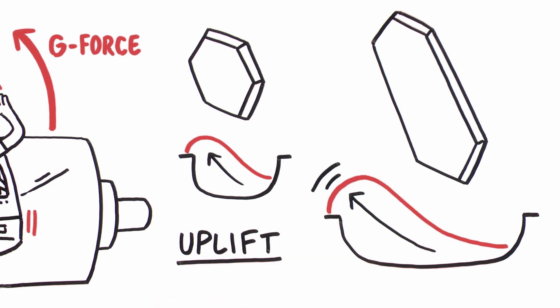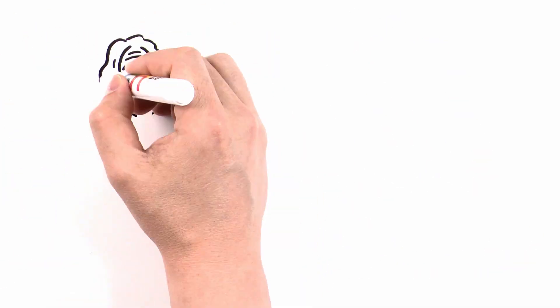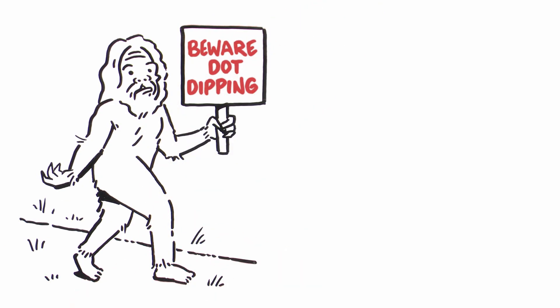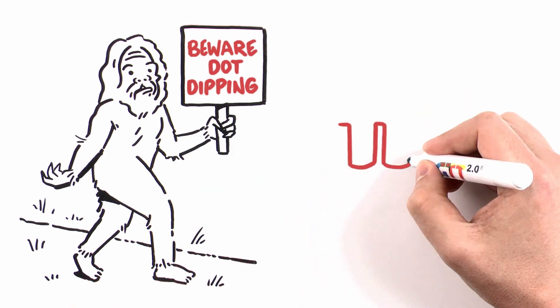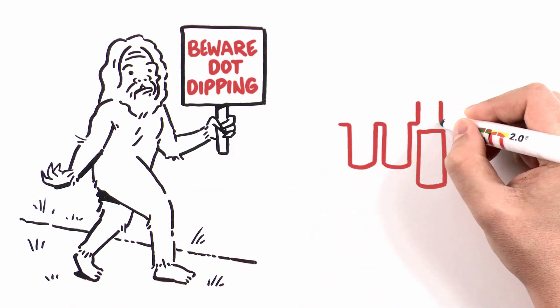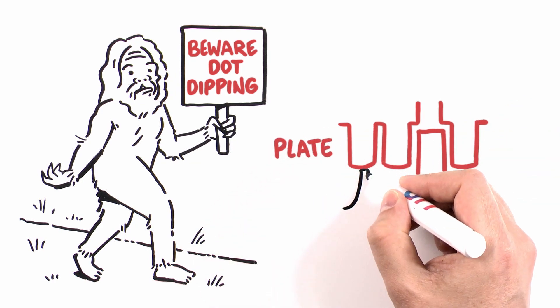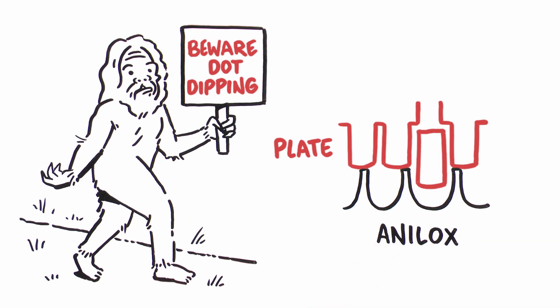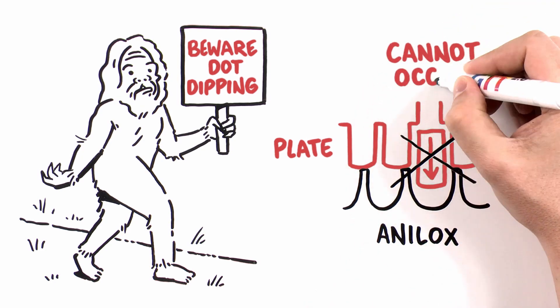All cell-based engravings create turbulence on the surface that is simply not optimal for process dot printing. The industry myth that dot dipping is occurring within the analog cells is impossible. Physics can prove that the amount of pressure required to force one plate dot to enter into an analog cell while the adjacent dot remains in contact with the analog surface simply cannot occur.